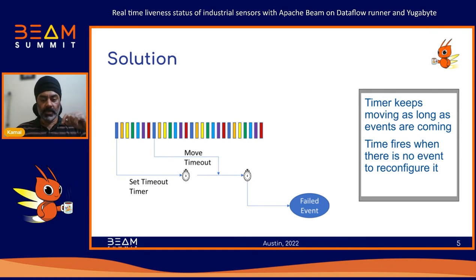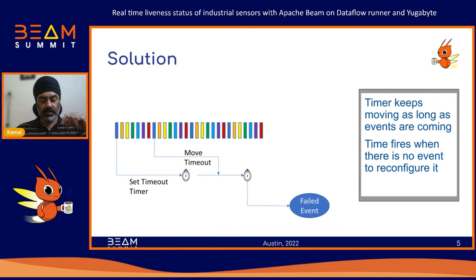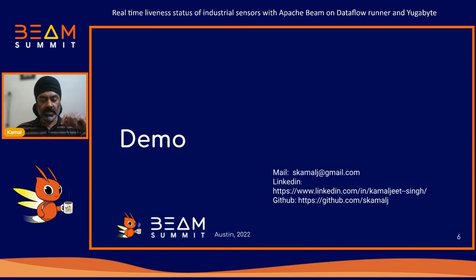Once an event comes in, it sets a timer, and once the timer goes off it marks the sensor as failed. But if a new event from that sensor comes in, we move that timer forward by that delta — since events come every five seconds, the timer keeps shifting into the future as events arrive, so the timer never fires. But if a sensor fails, there's nothing to shift the timer, so it goes off and sets the status of that sensor to failed. As long as events are coming in, the timer keeps moving; once events stop, the timer fires.